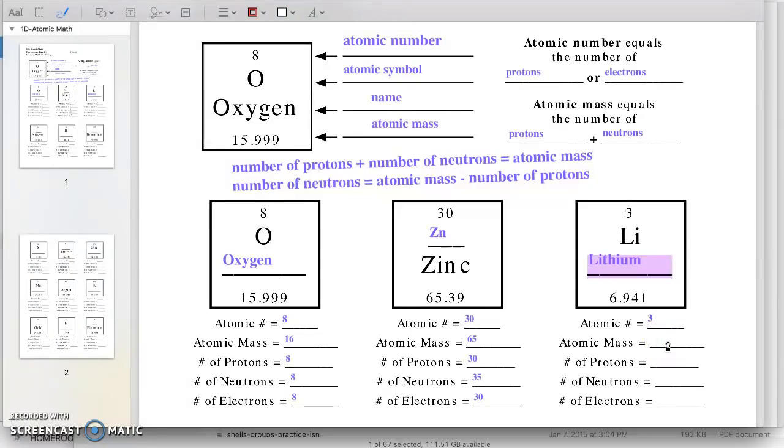The atomic mass is the number at the bottom of the box. For lithium, it is going to be 7. Because remember, we're rounding to the nearest whole number. The number of protons is going to be the same as the atomic number. That's going to be 3. The number of electrons is going to be the same as the atomic number. 3. The number of neutrons is going to be equal to the atomic mass minus the number of protons. So it's going to be 7 minus 3 equals 4.